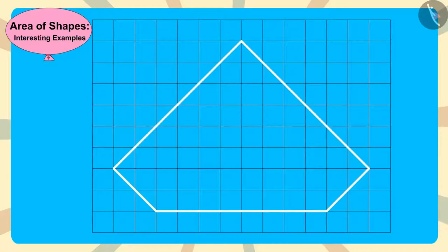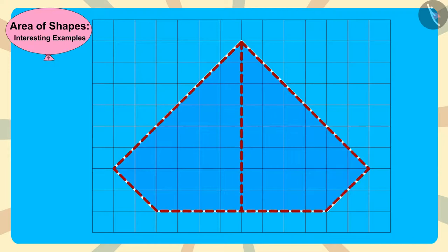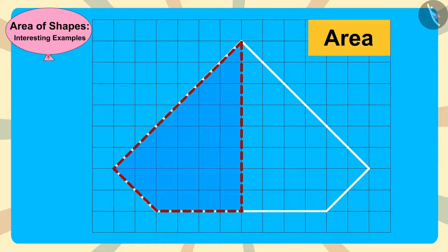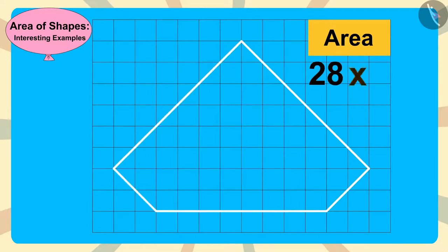Now, because the diamond is made of these two equal parts, she multiplied the area of this part of the diamond, 28, by 2.